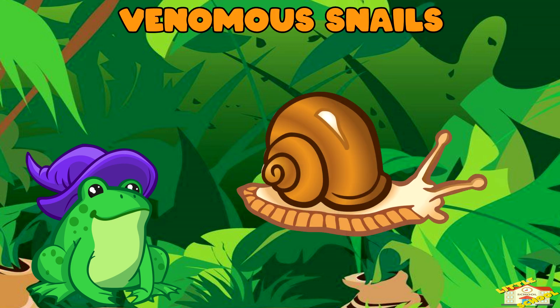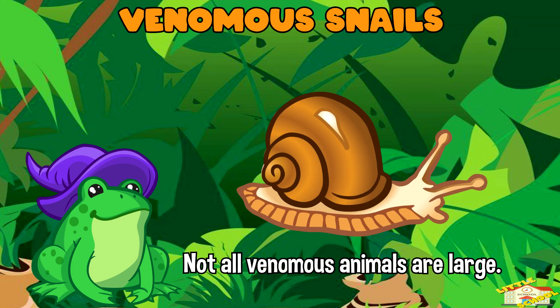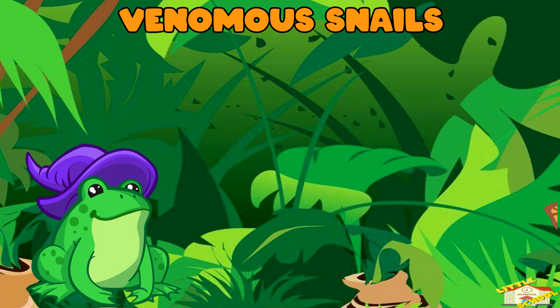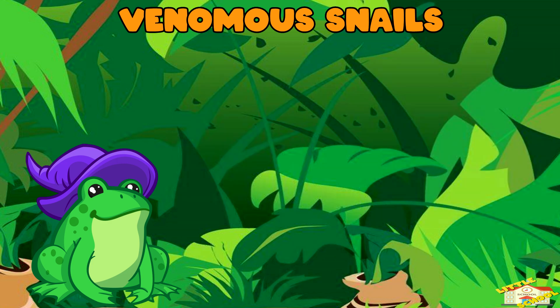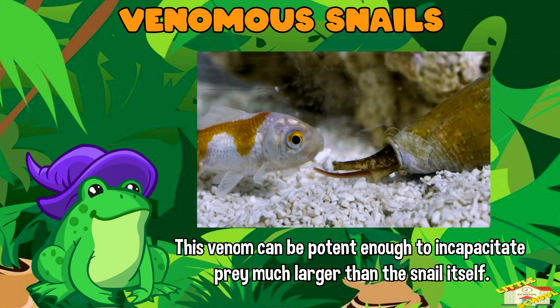Venomous snails: not all venomous animals are large. Cone snails, for instance, are small marine snails that possess a harpoon-like tooth loaded with venom. This venom can be potent enough to incapacitate prey much larger than the snail itself.